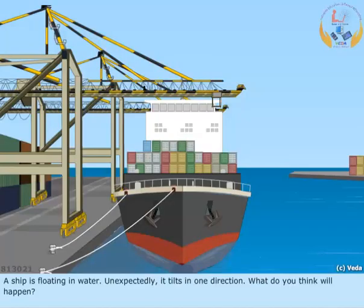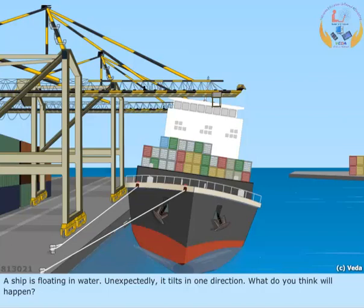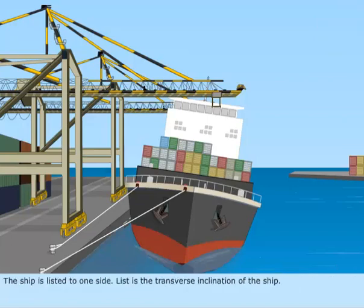A ship is floating in water. Unexpectedly, it tilts in one direction. What do you think will happen? The ship is listed to one side.